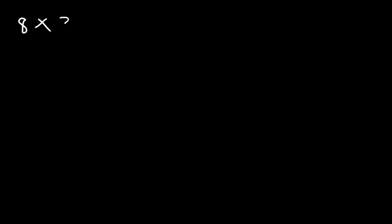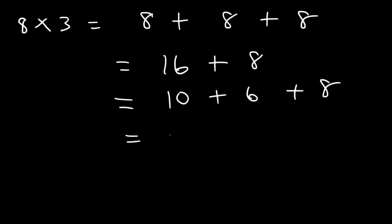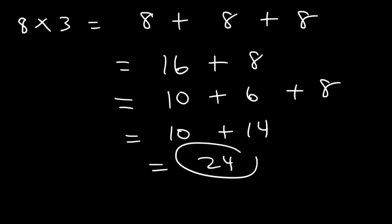Now what about 8 times 3? This is simply 8 plus 8 plus 8. 8 plus 8 is 16. What's 16 plus 8? Think of 16 as 10 plus 6. 6 plus 8 is 14, and 10 plus 14 is 24. So 8 times 3 is 24.